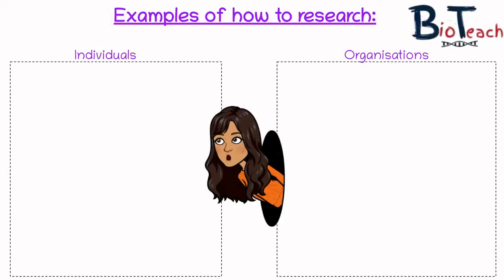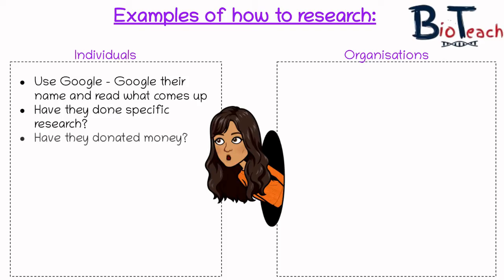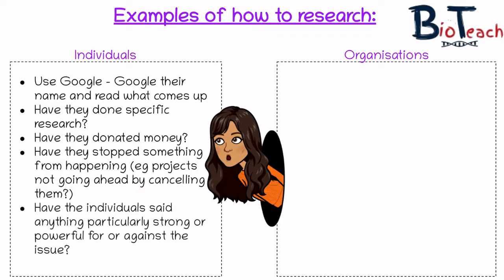Let's talk about the individuals first. I would use Google as a starting point — Google the name of the person and see what comes up. Assess whether they've done any specific research on that particular topic. Could they have donated money which influenced the research? Did they petition to have something changed, or did they stop a project from going ahead? They could have said something particularly strong or powerful either for or against the issue. I would be asking myself these questions to help assess what influence they had.